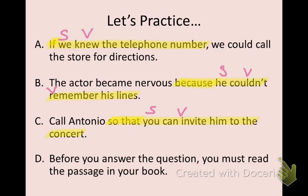Finally, sentence D: "Before you answer the question, you must read the passage in your book." "Before" is the subordinating conjunction, indicating there will be an adverb clause in the sentence. We take the clause all the way to the comma. Within that adverb clause, "you" is the subject and "answer" is the verb.